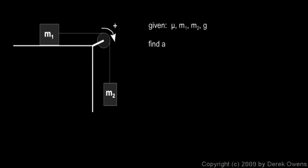And now we'll come back to this situation where we have two masses, one resting on a table and the other hanging over a pulley. And we're given mu, m1, m2, and g. And in this case we're told to find A.